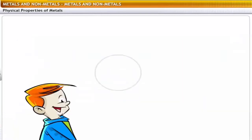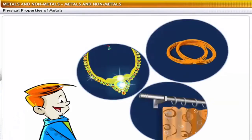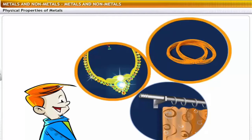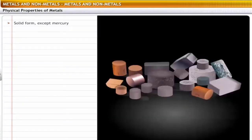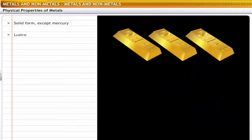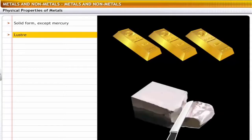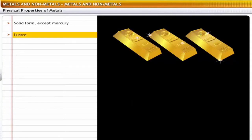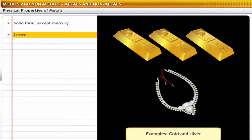If you look around, you will find metallic objects in various forms. For example, jewelry made of gold and silver, wires made of copper, and curtain rods made of aluminium are all metallic objects. Metals are used to make these objects because of some specific physical properties. Let's take a look at some important physical properties of metals. All metals are solids at room temperature except mercury, which is a liquid. All metals are lustrous — metal surfaces shine when freshly cut. Gold and silver are popularly used for making jewelry because of their luster.